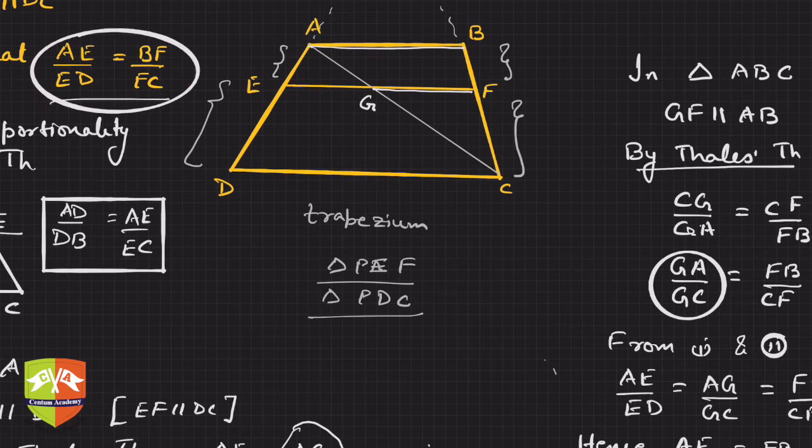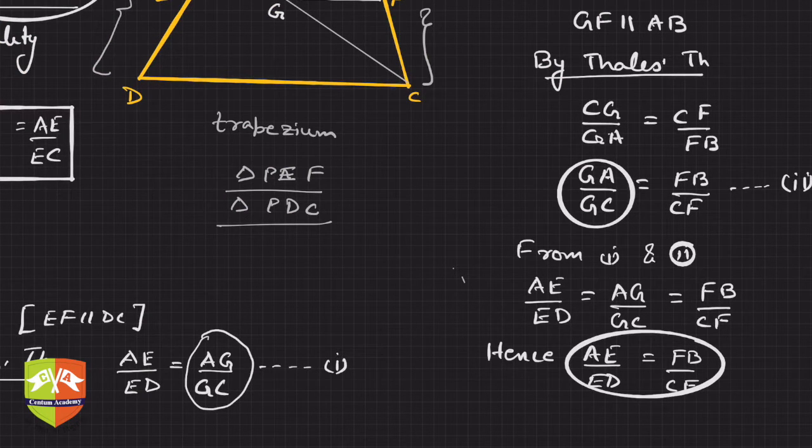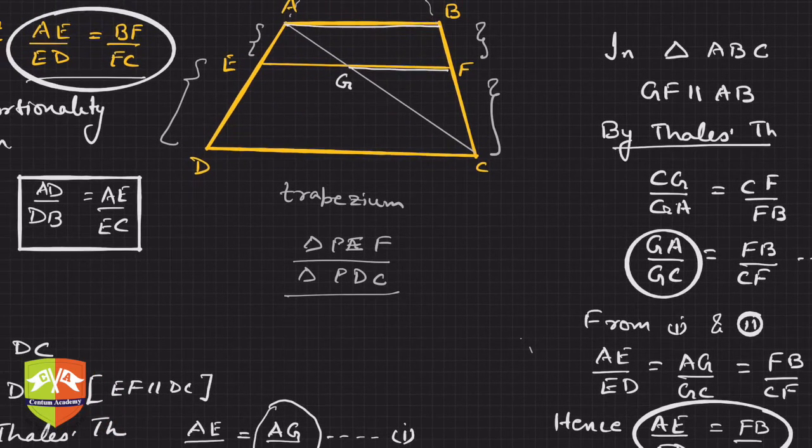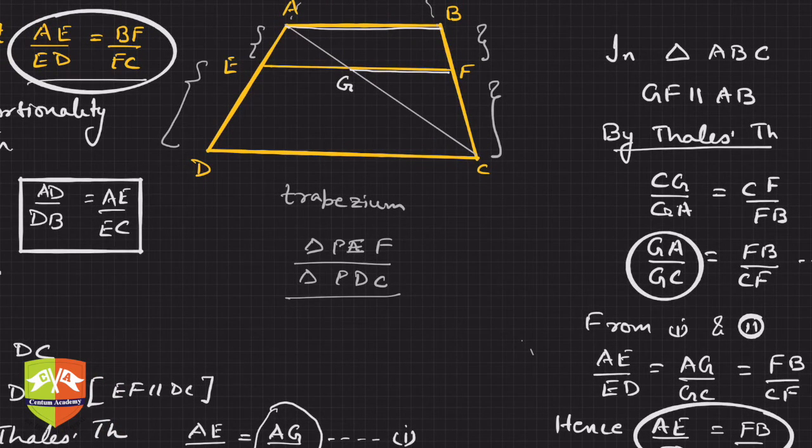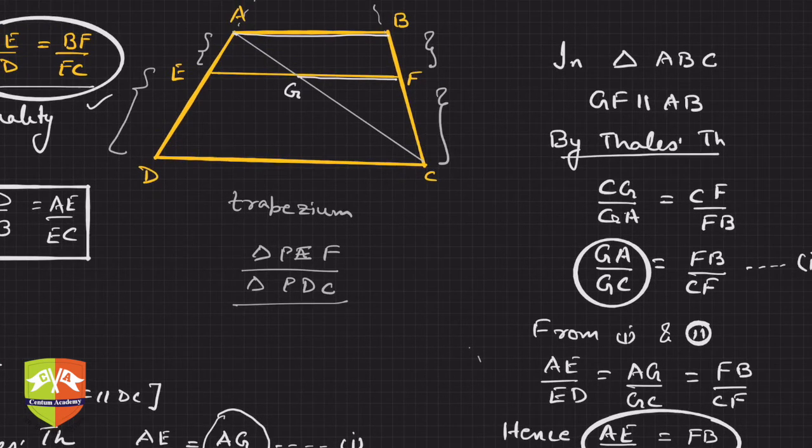The only thing is FB is written as BF over here. So hence if you can match, this one and this one are the same. So in this question what did we learn?